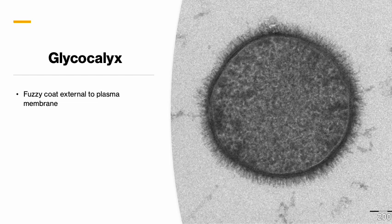The glycocalyx, which we talked about last week, is the fuzzy coat outside of the plasma membrane of the cell — the fuzzy outer area of the cell.